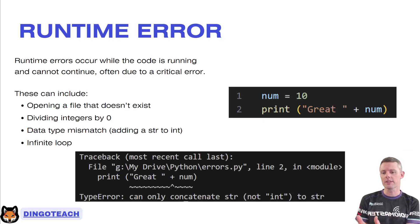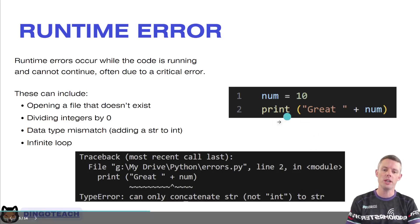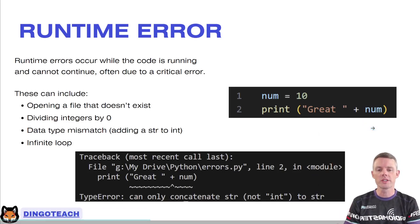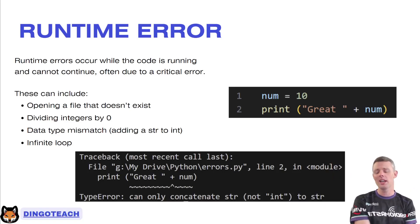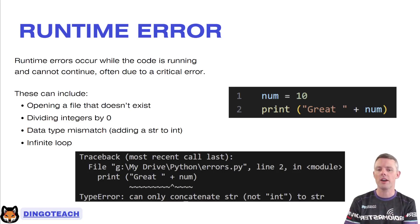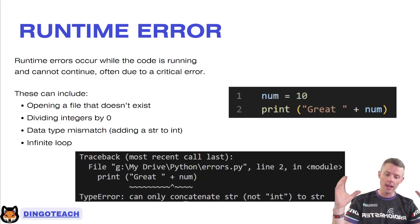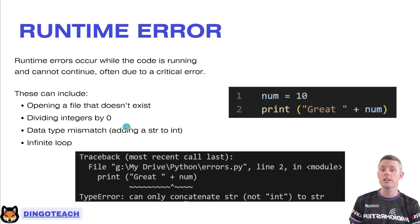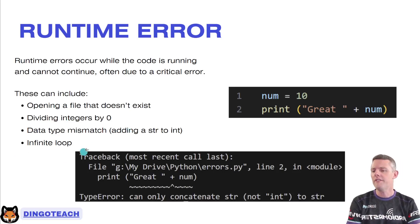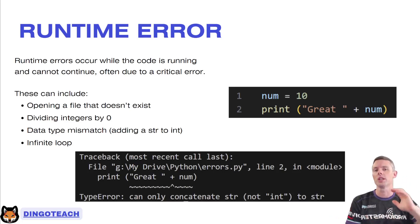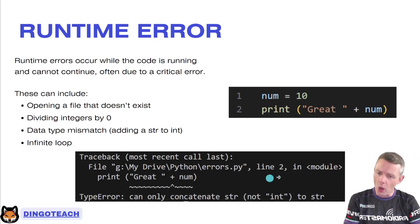For a runtime error, I've written num equals 10 and then said print 'great' plus num. As I showed in a previous video, you cannot add a string and a number together — that doesn't work, that's a data type mismatch. There are other runtime errors too: if you try to open a file that doesn't exist, you get a file-not-found error. If you divide by zero, you get a division by zero error. If a loop never stops, you get an infinite loop — that's where your program goes gray and says 'not responding.' Runtime errors halt your program; they stop it and it can't move on.